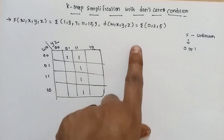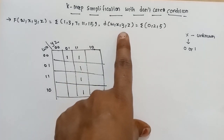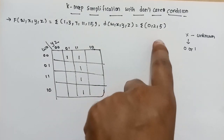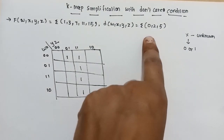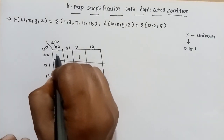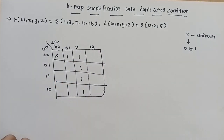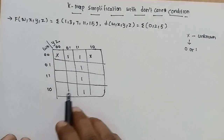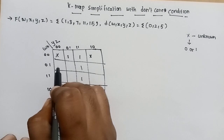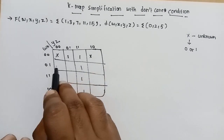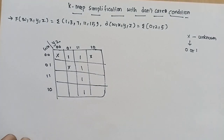Don't care is also here. D of W, X, Y, Z — don't care is here at positions 0, 2, 5. So M0 is here — this is M0, X is here, don't care. Next to 2: M2 here. Next to 5: M0, M1, M2, M3, M4, M5 here. Don't care — okay.